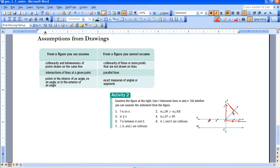The things that you can't assume. I spend most of my time talking about the things you can't assume in class. Collinearity of three or more points that are not drawn on lines. So if you look here, we have the points J, K, and L. And if I was to take a ruler, those all would actually fall in a line. But because there was no line drawn, we cannot assume that they are collinear.